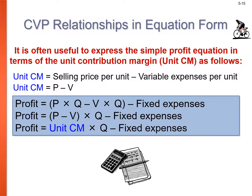It is often useful to express the profit equation in terms of the unit contribution margin. Contribution margin per unit equals selling price per unit minus variable expense per unit, or P minus V. In the equation P×Q minus V×Q, we can factor out Q and write: profit equals (P − V) × Q minus fixed expenses, where (P − V) is the unit contribution margin.